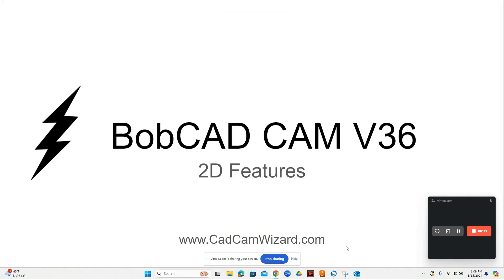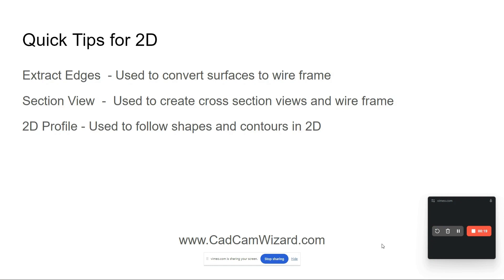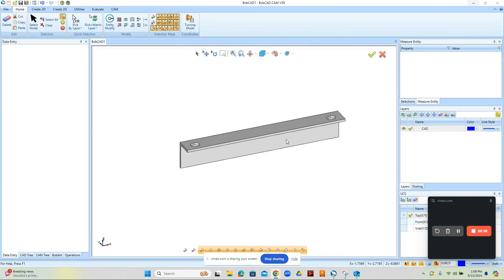Hey everybody, it's Al with cadcamwizard.com and today we're going to take a look at version 36 and a couple of 2D features. The first one is extract edges — you use this to convert surfaces or solids to wireframe, something I use quite often. In other systems it might be called project curves. The second one is section view, which lets you see a cross-section of the part and also generate wireframe. The third one is 2D profiling, something every shop does every day. Let's get into it.